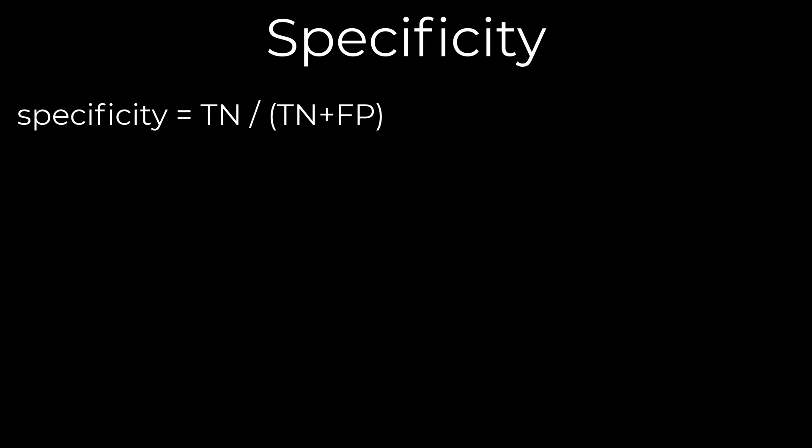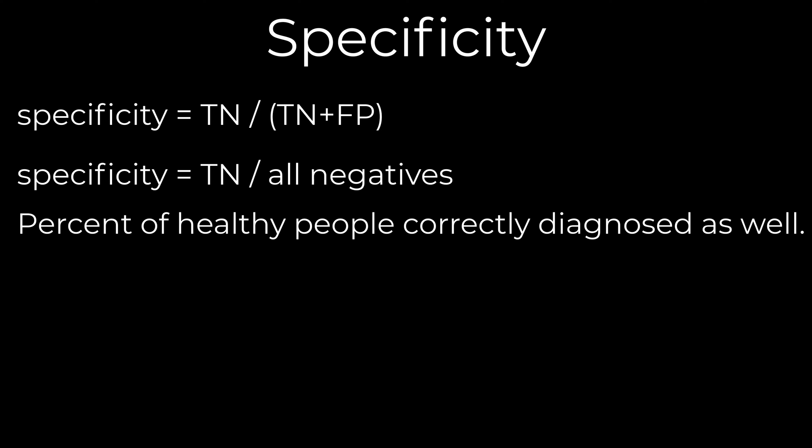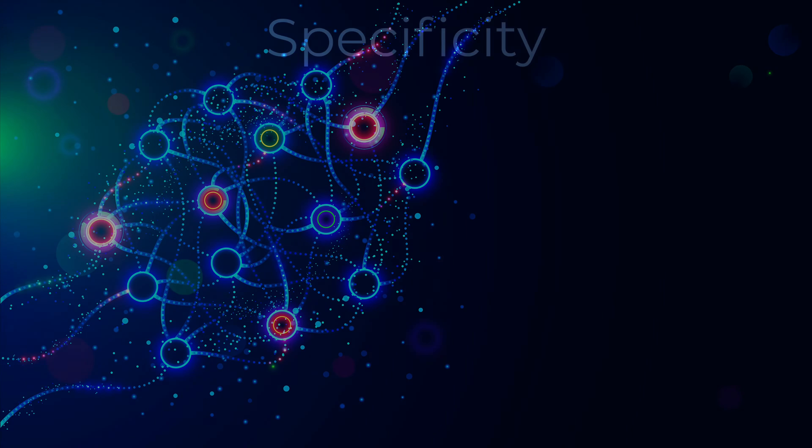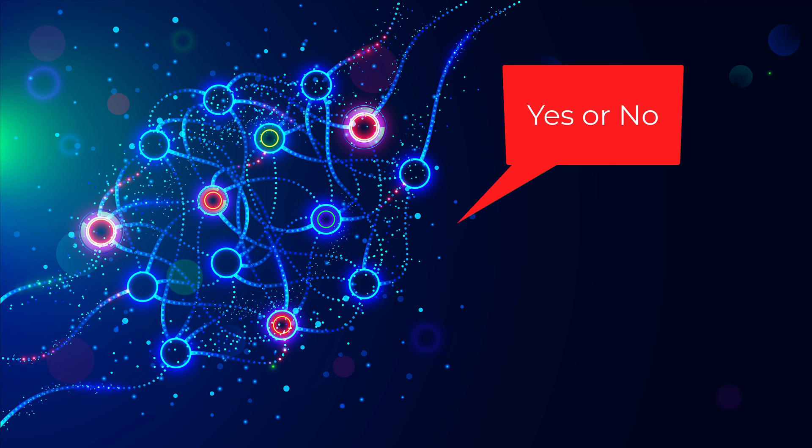Specificity is the number of true negatives, TN, divided by the number of true negatives, TN, plus the number of false positives, FP. TN plus FP is the same as the number of all negatives. Specificity is the percentage of people without a disease that a test correctly identifies as not having that disease.